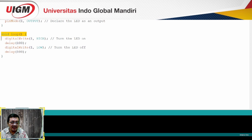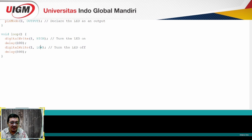Kemudian di bagian loop, yang prosesnya akan diulang-ulang, saya tinggal memberikan logika HIGH dan LOW secara bergantian ke pin 1. Caranya adalah digitalWrite, kemudian sebutkan pin berapa, akan diberi logika HIGH atau LOW. Saya kasih HIGH dulu, kemudian LOW. Supaya terlihat kedipannya, di antara HIGH dan LOW ini saya kasih delay 100, biar kelihatan hidup mati hidup mati.